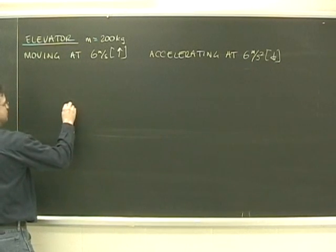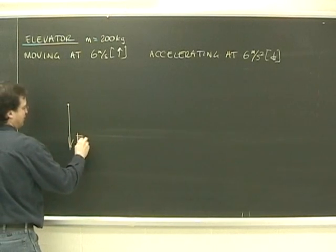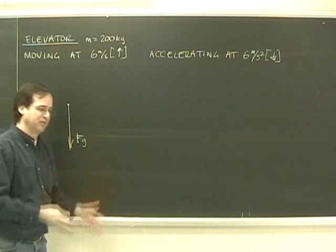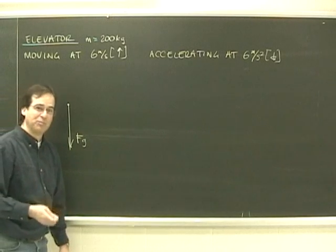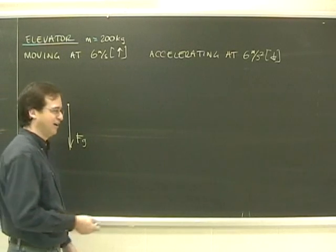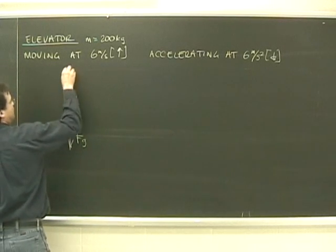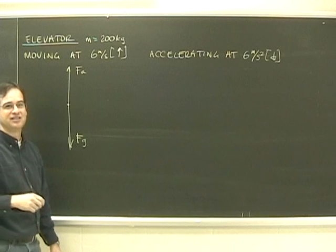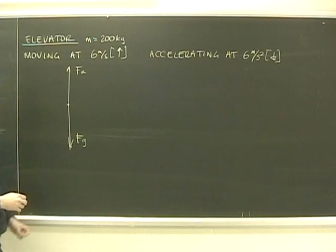So here's my free body diagram. First thing you say, is there gravity? Yup, there's gravity. Is it sitting on a surface? No, it's not sitting on a surface, it's moving up and down an elevator shaft. Is there an applied force? Yes, there is a rope or a cable attached to the elevator and it's pulling up on the cable. So here's our applied force. And the last question is, is there friction? Well, there's no friction in this problem. So here's my free body diagram.